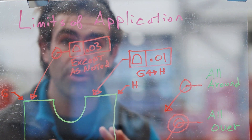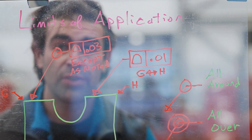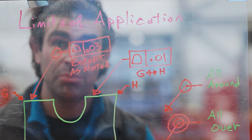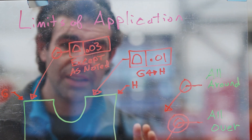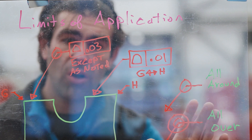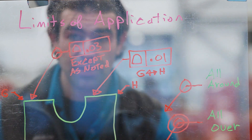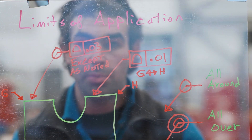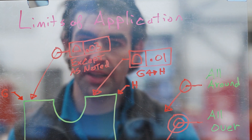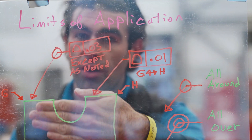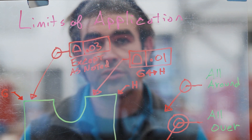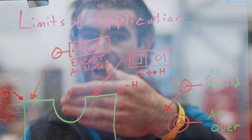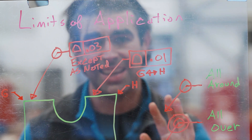Sometimes you'll see several profile tolerances applied to seemingly the same place on the part. The last is our all-over symbol — a 3D symbol that applies to all surfaces visible on the drawing and also the surfaces parallel to the drawing plane.